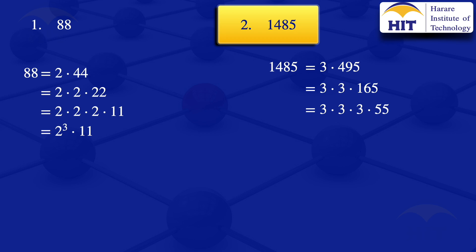We now look at 55 and find its prime factors, starting with the smallest. 2 is not a factor of 55; we move on to 3. 3 is not a factor of 55; we move on to 5. 5 is a factor of 55, so 55 = 5 × 11. Our full expression becomes 3 × 3 × 3 × 5 × 11.